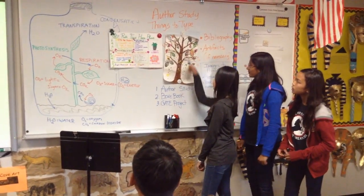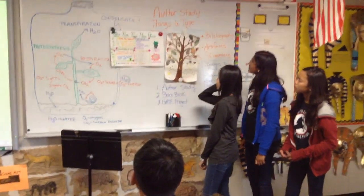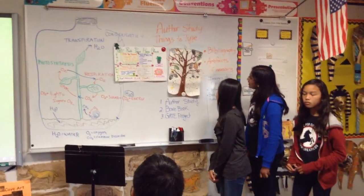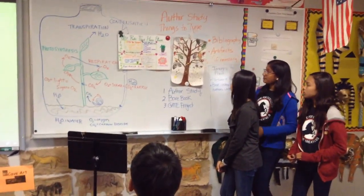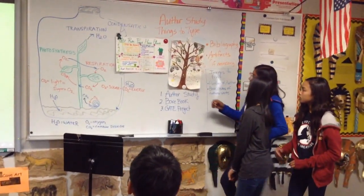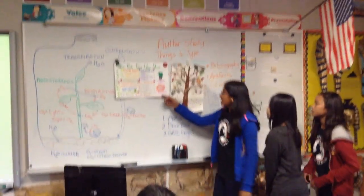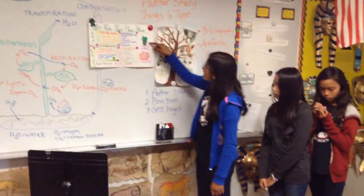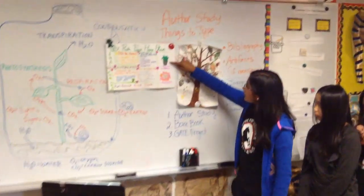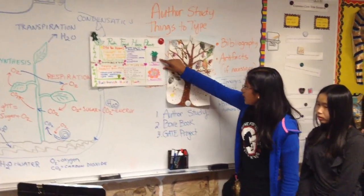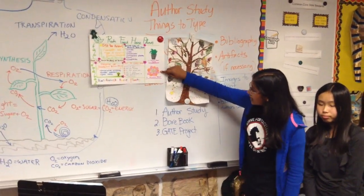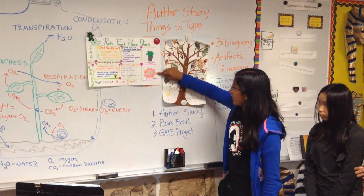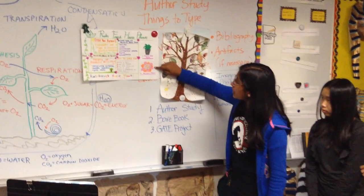This is a tree with leaves that have rainforest houseplants pictures on them. This is a type of rainforest houseplant called a bird's nest fern. And this is a type of rainforest houseplant called a passion flower.